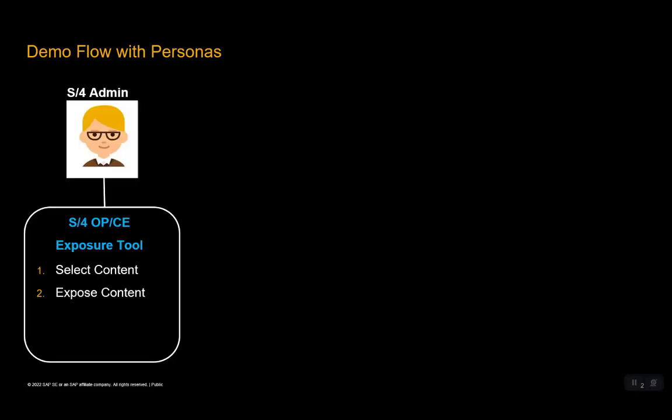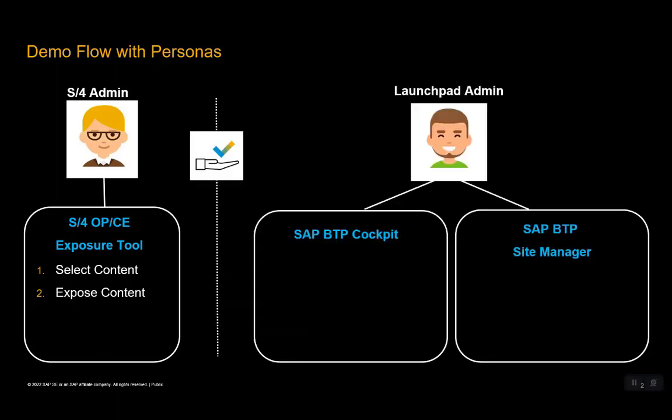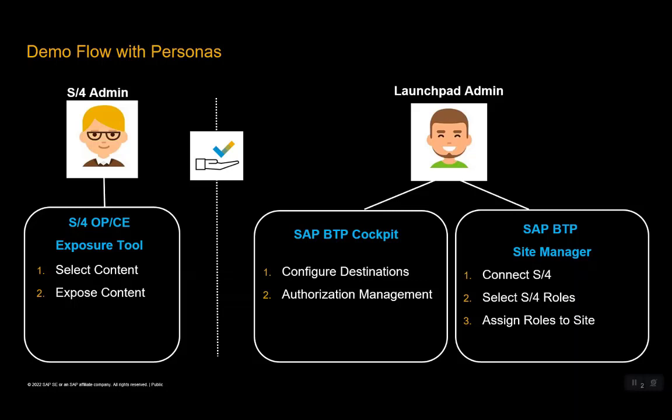A few words about the demo flow with the personas. We have two personas involved in this demo. The first persona is the S4 admin, which will use the Exporter Tool in order to select the S4 content that they would like to share with the Launchpad and expose it. Then we have the Launchpad admin persona, which will mainly use the BTP cockpit for setting up the destination and do the authorization management. Then they will use the Site Manager in order to connect the content provider, select the roles and assign it to the site. Let's start with the demo.